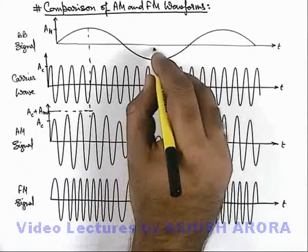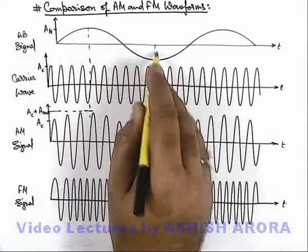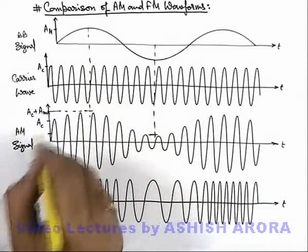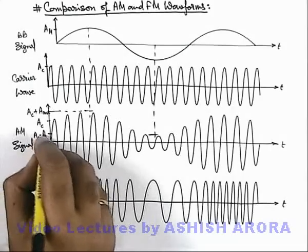And at the other end, it is at the lowest level. The displacement of baseband signal is at minus Am, the amplitude of the amplitude modulated wave will be Ac minus Am.